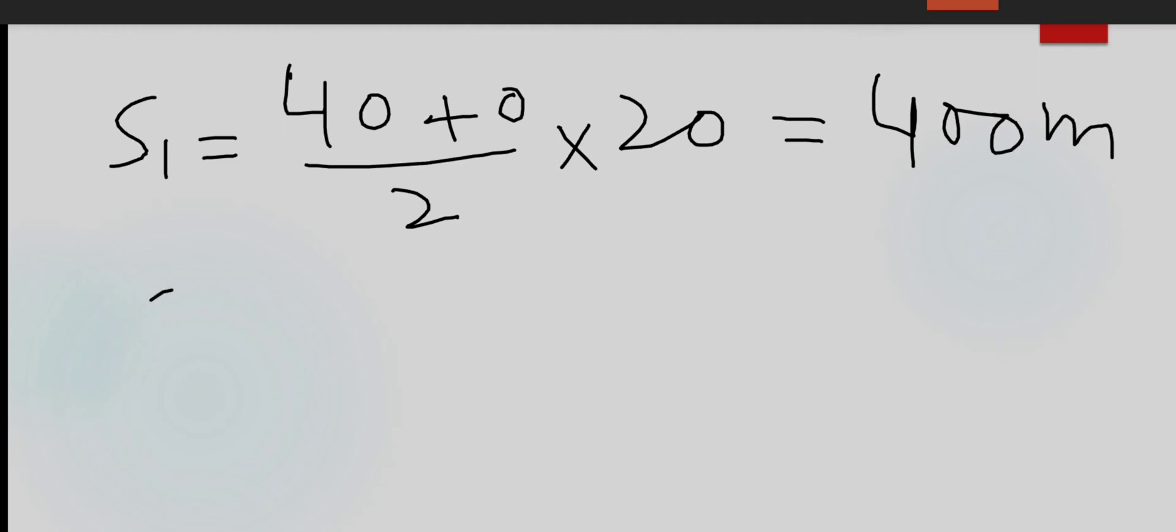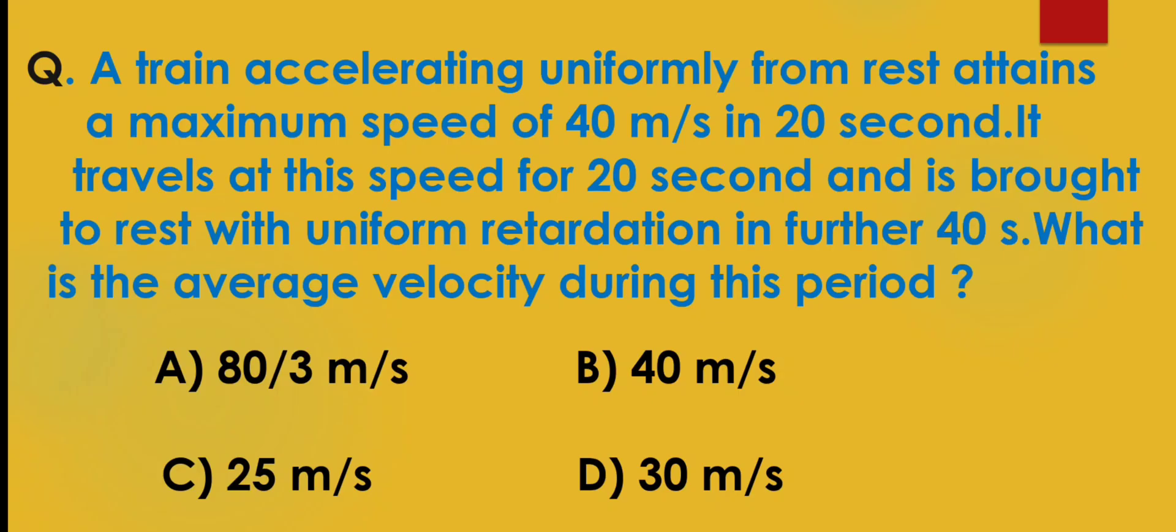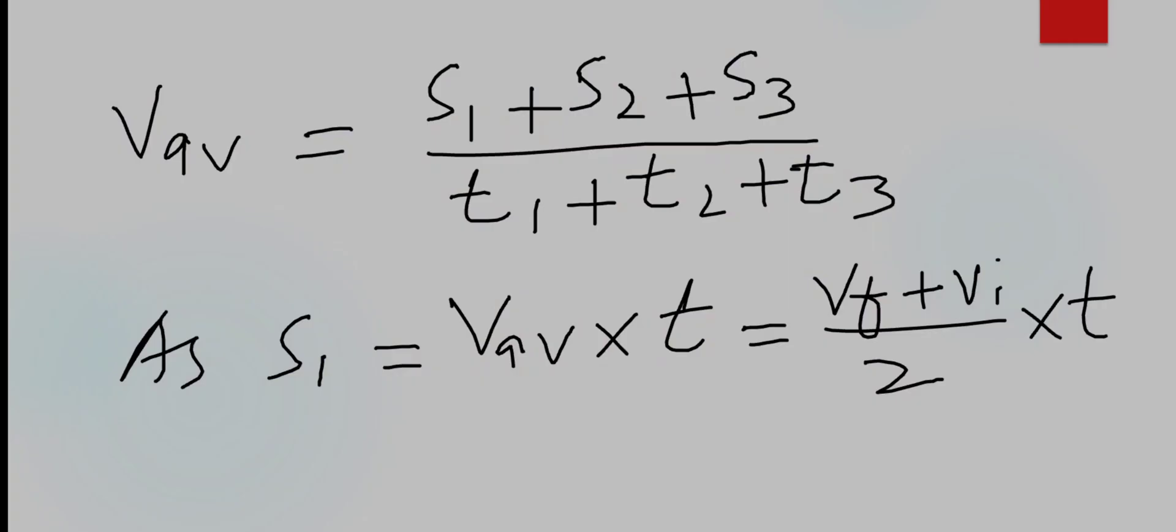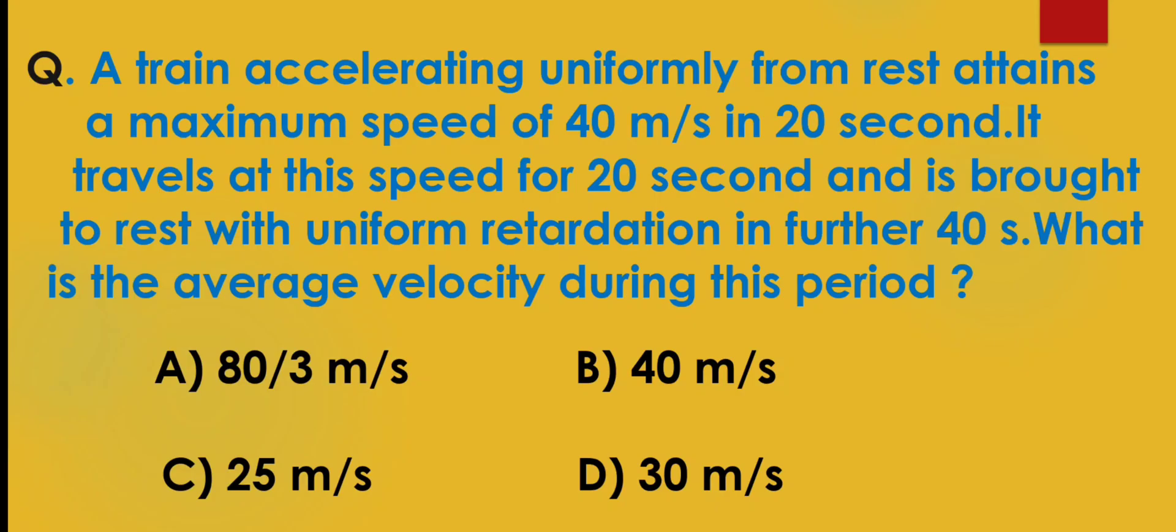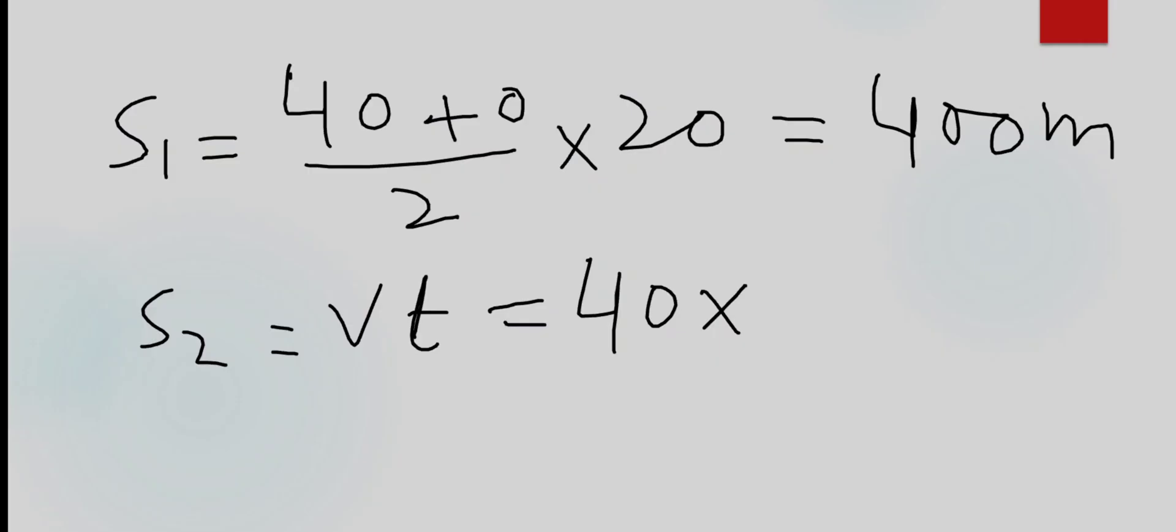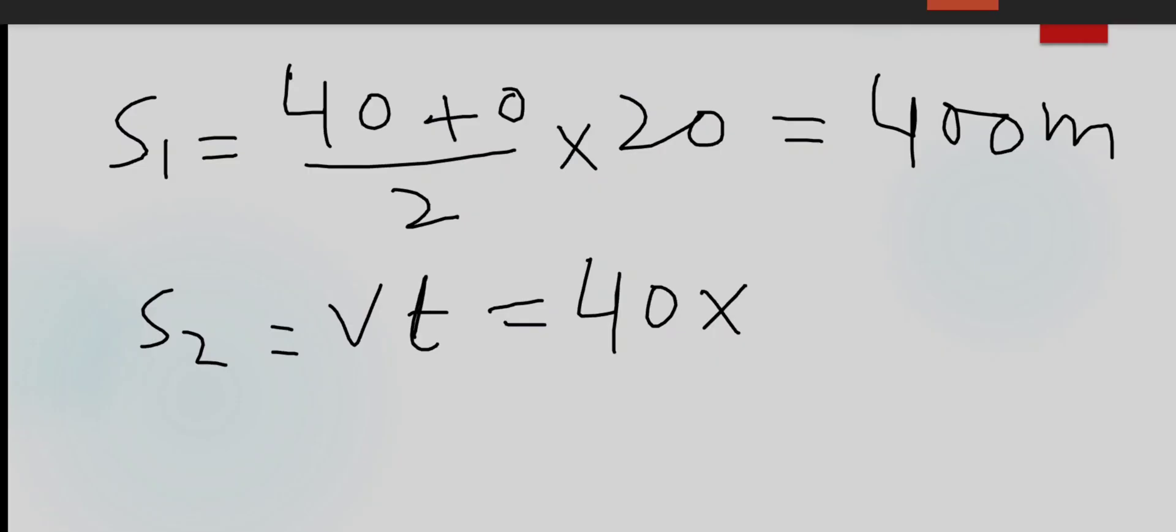Now we will calculate S2. So S2 is equal to V into T. S2, it travels at this speed for 20 seconds, means same speed traveled for 20 seconds. So S2 will be equal to V into T, so V is 40 and T is 20 seconds. So 40 into 20, it will be equal to 800 meters.